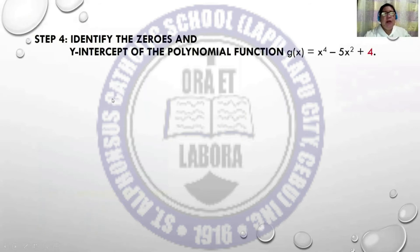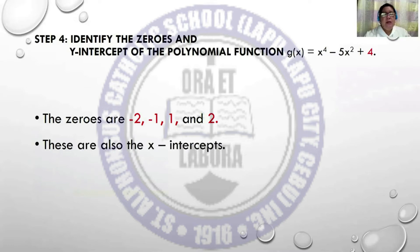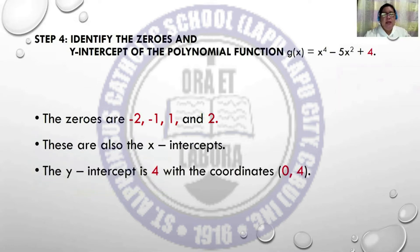For Step 4, identify the zeros and the y-intercept of the polynomial function. The zeros are -2, -1, 1, and 2, which you can take from the table of values. They are also called the x-intercepts. And the y-intercept is 4, with coordinates (0, 4) — simply the value of the constant.